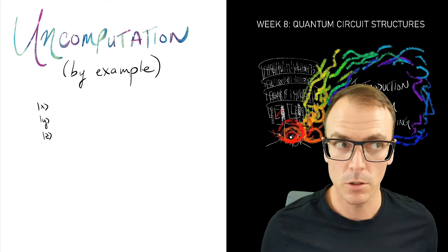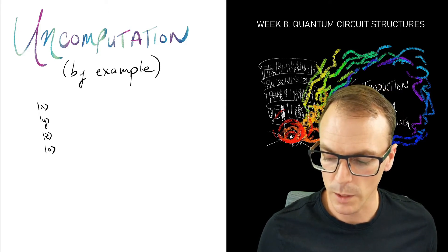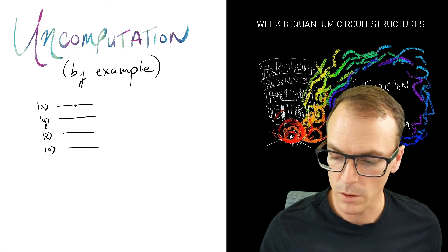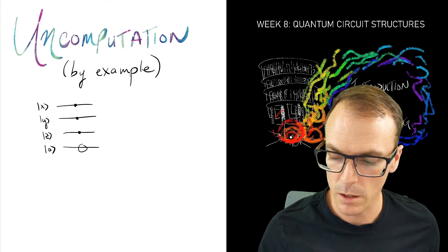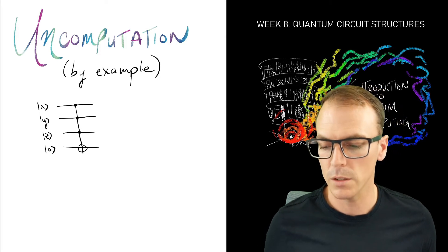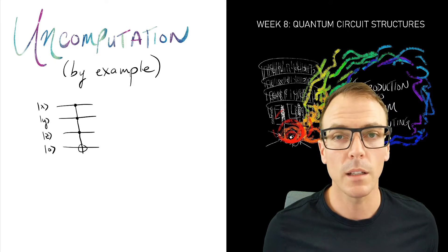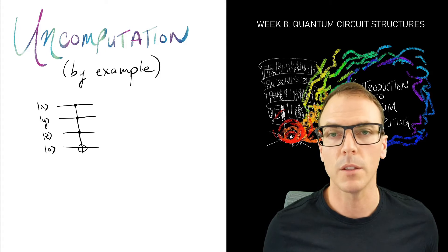And we can have a controlled-controlled-controlled NOT. It sounds complicated, but it's easy enough to draw with these circuits. So that performs an AND between three Boolean variables. The bottom qubit gets flipped if and only if all three of the top qubits are one.